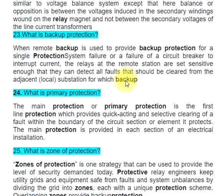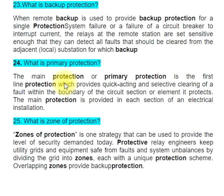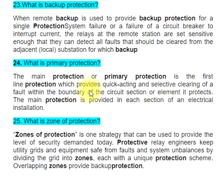Question 24: What is primary protection? The main protection, or primary protection, is the first-line protection which provides quick-acting and selective clearing of a fault within the boundary of the circuit section or element it protects. The main protection is provided in each section of an electrical installation.